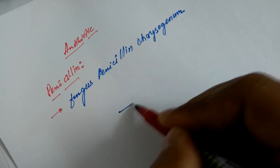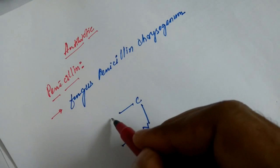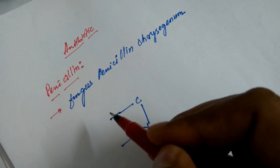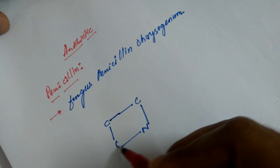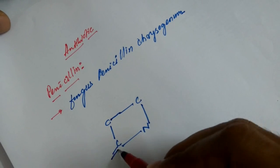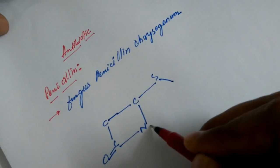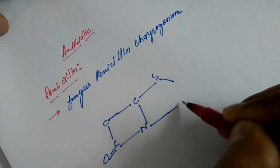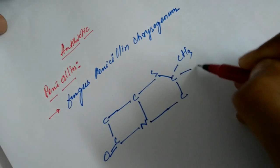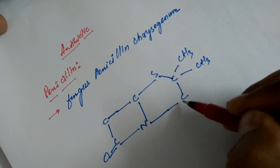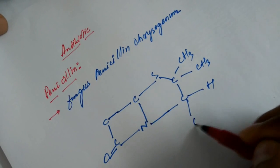It is very important to know this structure because it has many derivatives. Unless you understand this base structure, you will not understand the other derivatives. If you understand this, it will make everything much easier. Just concentrate — what I am drawing now is the main penicillin structure.